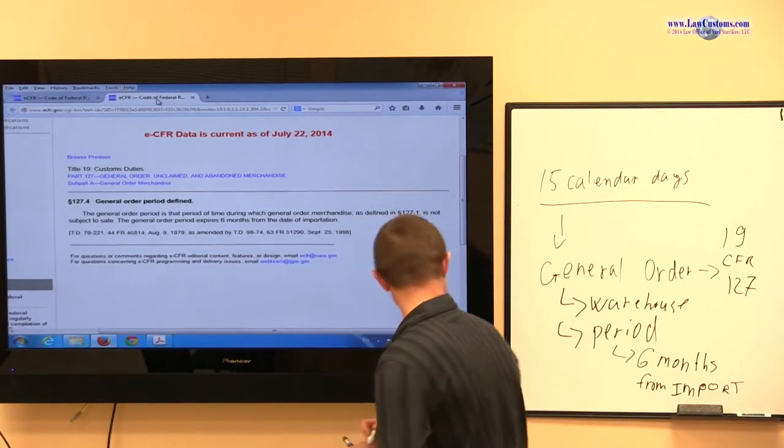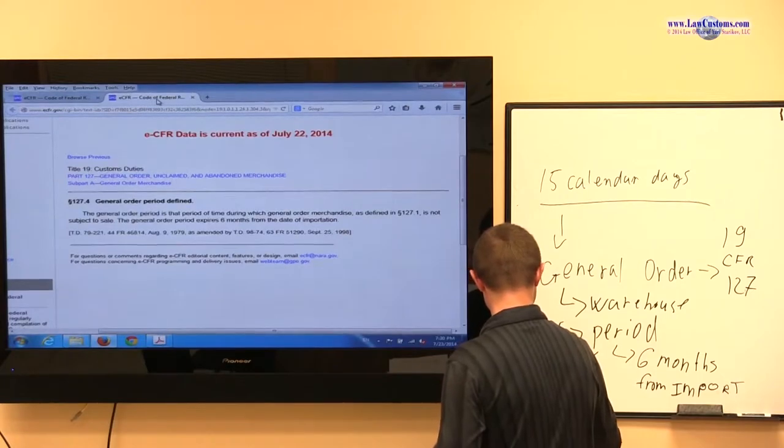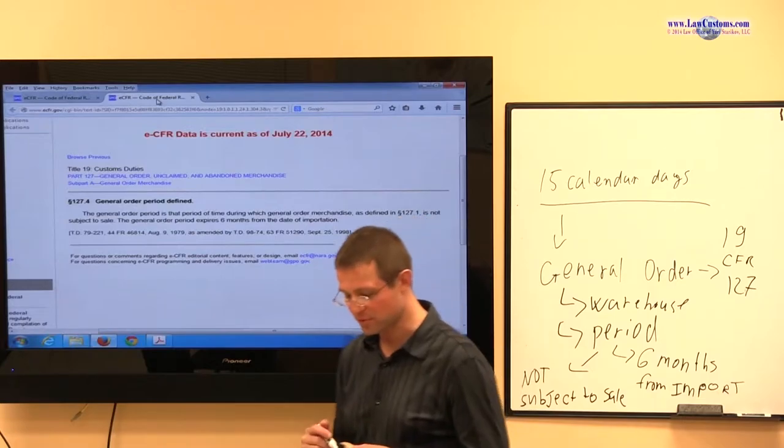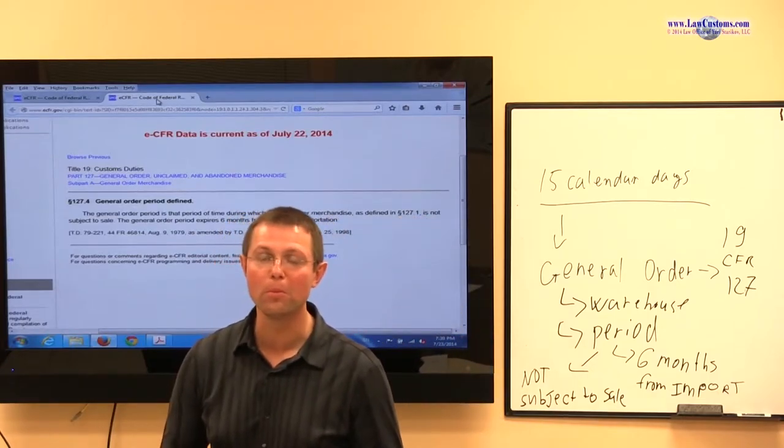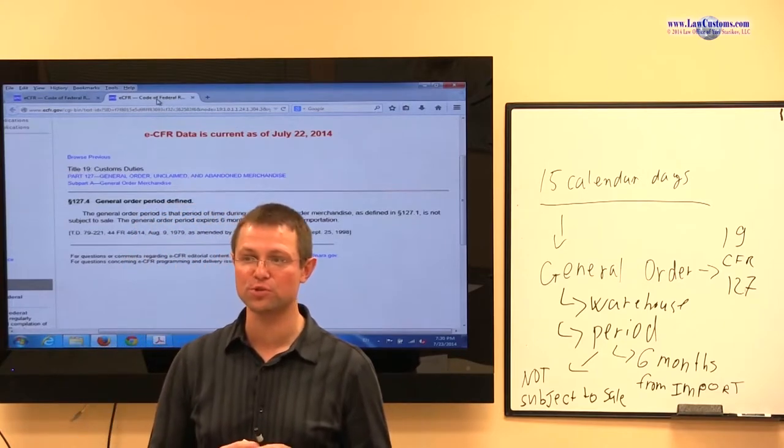It says the general order period is that period of time during which general order merchandise is not subject to sale. The general order period expires six months from the date of importation. So that's interesting. So this is where we get that six months, right? Six months from import. And what else? What else is important? Not subject to sale. So that's also important. Not subject to sale. By whom?